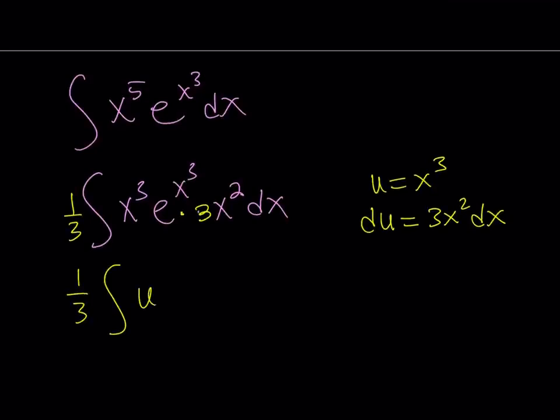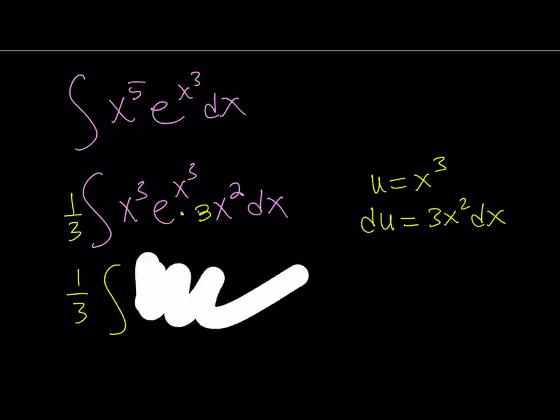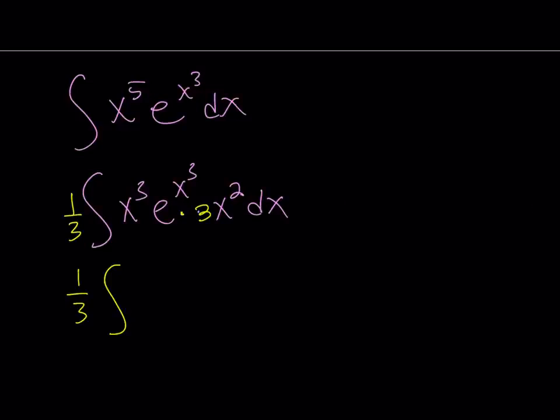So, now, we have pretty much everything we need. We can write it as one-third multiplied by x cubed, but x cubed is u. I don't want to use u here because I'm going to use u later. So, let's use a different variable. How about y? And don't ask y, why I use y, but y equals x cubed, dy is 3x squared dx. So, x cubed is going to be replaced with y. Then, we have e to the power y and dy.